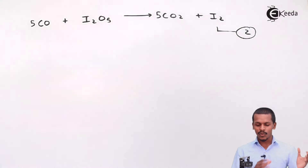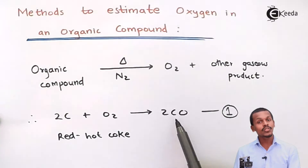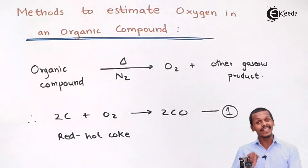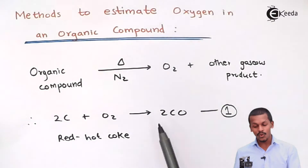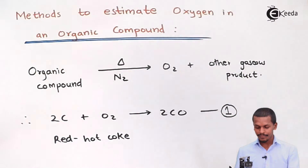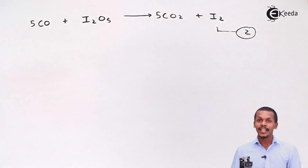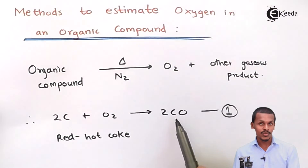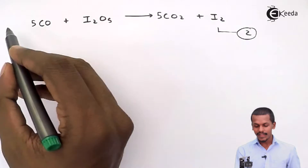This is the balanced reaction when carbon monoxide is treated with iodine pentoxide to form carbon dioxide, with iodine as a byproduct. In Equation 1, 2 moles of CO are produced. Since the same CO is passed through I₂O₅, we need to balance the moles of CO across both equations. To do this, we multiply Equation 1 by 5 and Equation 2 by 2.